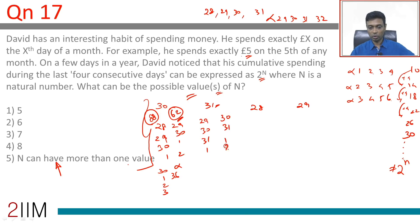30, 31, 1, 2, 3 adds up to 37—doesn't work. 29, 30, 31, 1 is 91—doesn't work. But 30, 31, 1, 2 is 64. We have a winner! 2 power 6 is 64, so N could be 6.